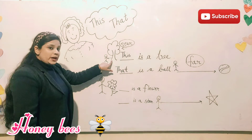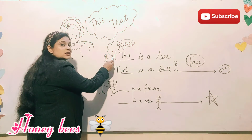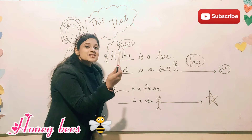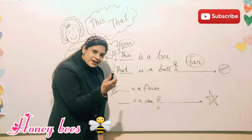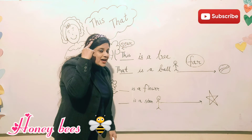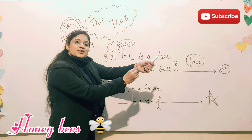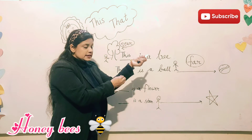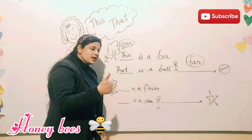Because the tree is very near, we are saying 'This is a tree.' This is a marker. This is my hair band. This is my bangle. This is my coat. Okay?